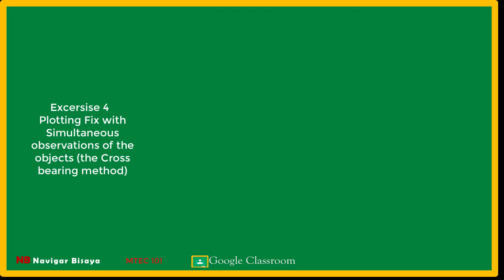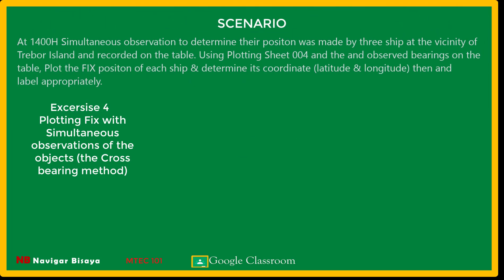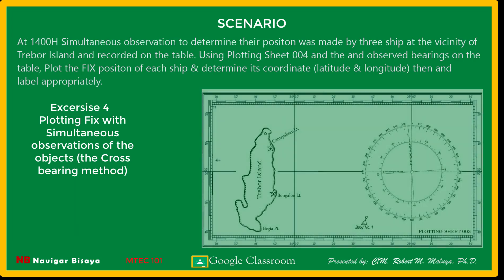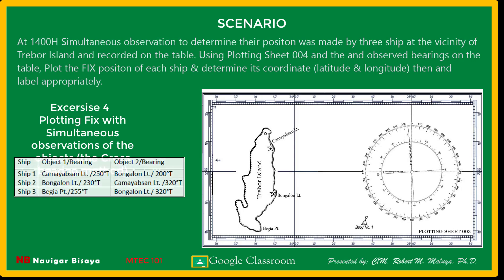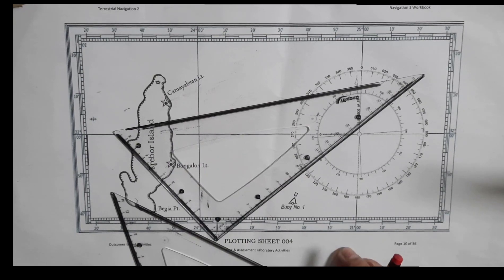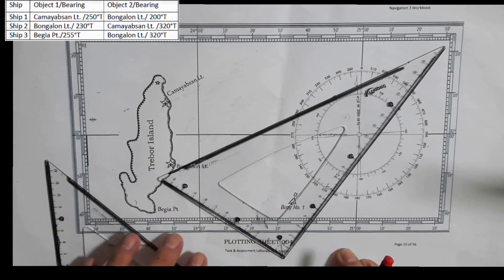Welcome back to our MTIC 101 Tutorial, Module 2, Exercise 4. The scenario: at 1400 hours, a simultaneous observation to determine their position was made by three ships in the vicinity of Trevor Island and recorded on a table. Using plotting sheet 004 and the observed bearings referencing Kamayab Sunlight, Bungalun Light, and Bikia Point, plot the fixed position of each ship and determine its coordinates — latitude and longitude — then label it appropriately. We are going to plot the position of Ship 1 by cross bearing.